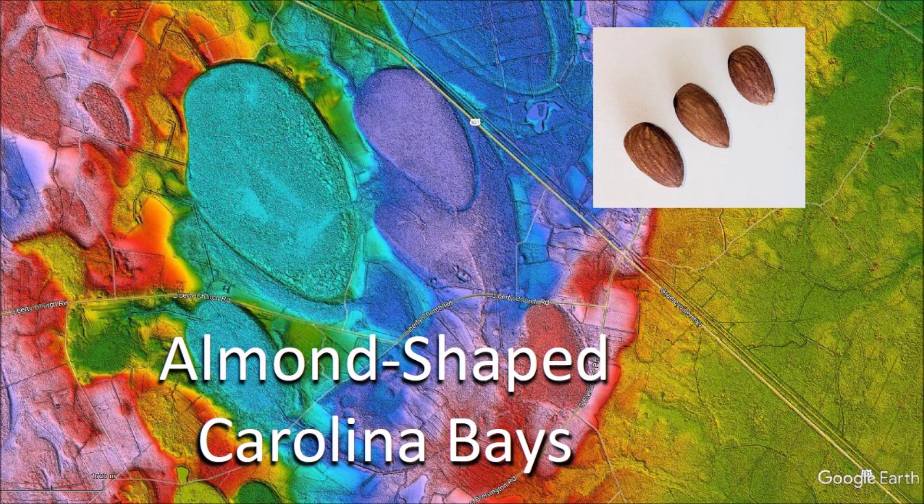The Carolina Bays originated as inclined conical cavities, so generally they have mathematically elliptical geometry. The shape of the bay may be modified by the conditions of the terrain at the time of emplacement, or it may be modified later by erosive processes or ground movement. This presentation discusses the mechanism of formation of the almond-shaped bays near Wilson, South Carolina.